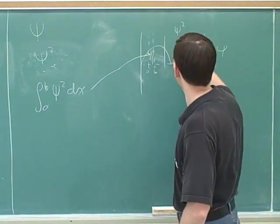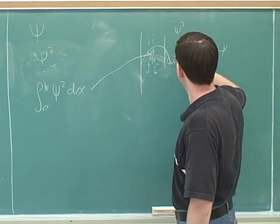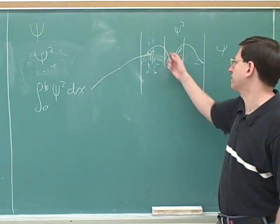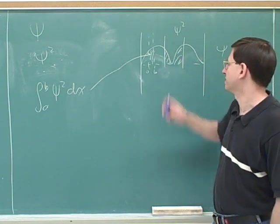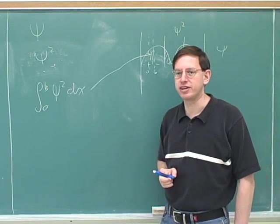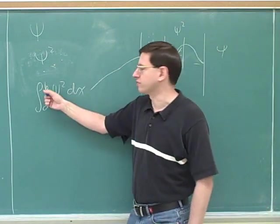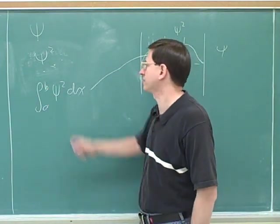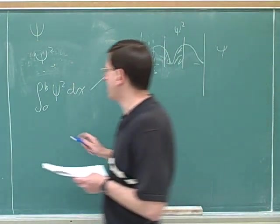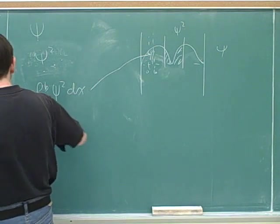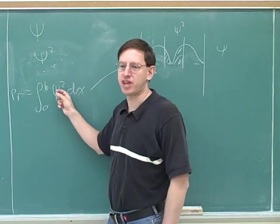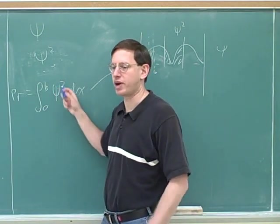If you wanted to know the probability that the particle was between two regions, you would take this integral and figure out the area over there. The psi squared doesn't have to look like what I drew — I just invented something. But whatever the curve looks like, the areas under the curve give you the probabilities, which means the integrals give us the probabilities, which means we have to review a little calculus to work with this. So the basic idea is that probabilities are given by integrals of the psi squared curve — not of psi, but of psi squared. We have to remember to square the wave function.